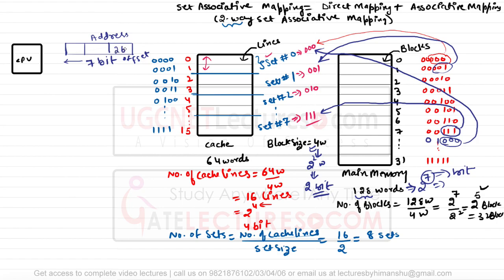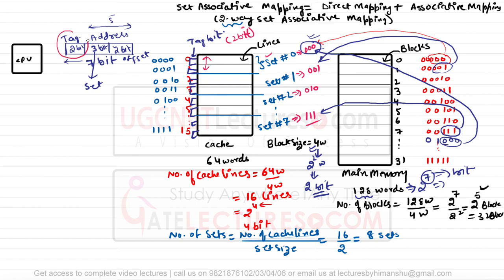The offset is 2 bits. The next bits represent the set number, and the remaining bits act as the tag. Three bits are used to represent the set. Out of 7 total bits, 3 are used for set and 2 for offset, totaling 5 bits used, leaving 2 bits remaining. These 2 bits act as the tag. Each cache line has tag bits, and for this example the tag bits are 2 bits wide.